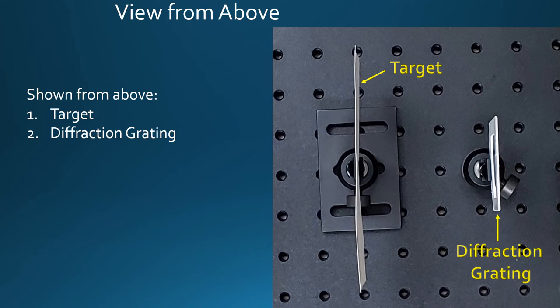In this view from above, the target and diffraction grating are shown. It's important to note that the target and diffraction grating should be parallel to one another and the laser should be perpendicular to both of them. The laser, not shown, is to the right of the diffraction grating in this case.